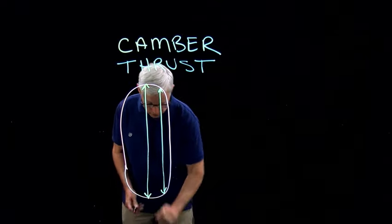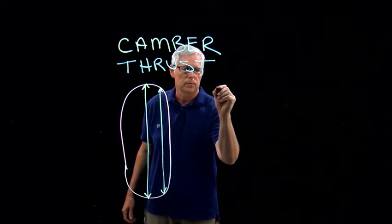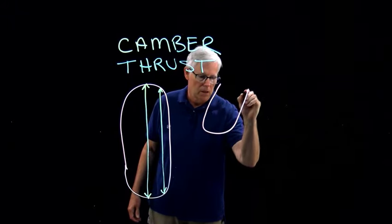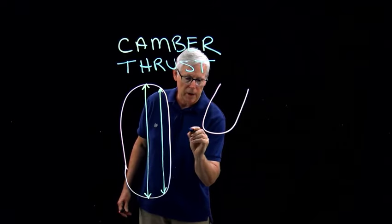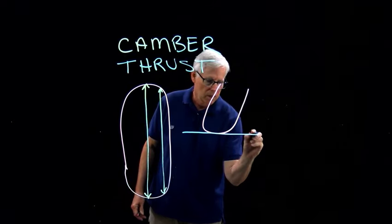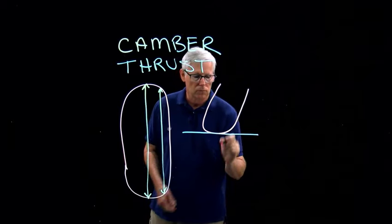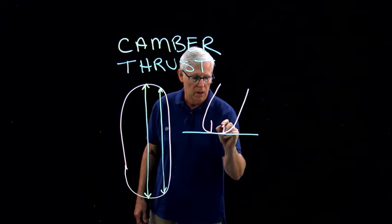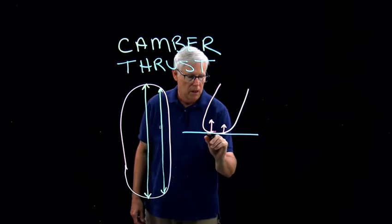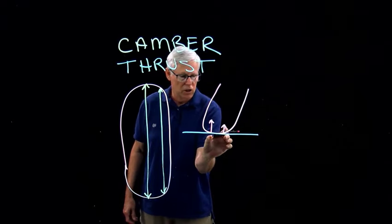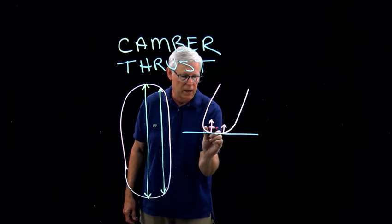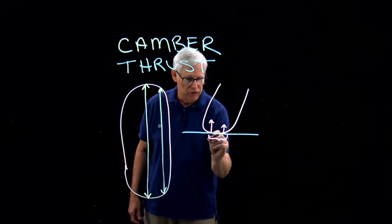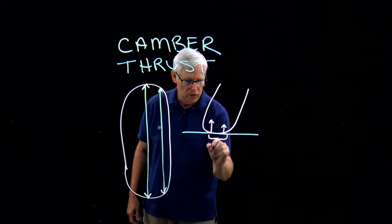When the motorcycle is in a turn and the contact patch with the ground, we have the size of the contact patch and the diameter of the tire at the contact patch. Here's our contact patch. What we essentially have is a cone shape.